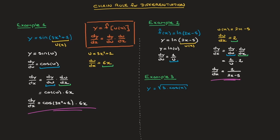We move on to the third and final example, in which we have to differentiate y, which equals the square root of 3 cosine of x. Once more, we start by defining the inner function — which in this case is 3 cosine of x — as u of x. So u equals 3 cosine of x. We can rewrite y in terms of u: y equals the square root of u. Looking at the chain rule, we'll need dy/du as well as du/dx.